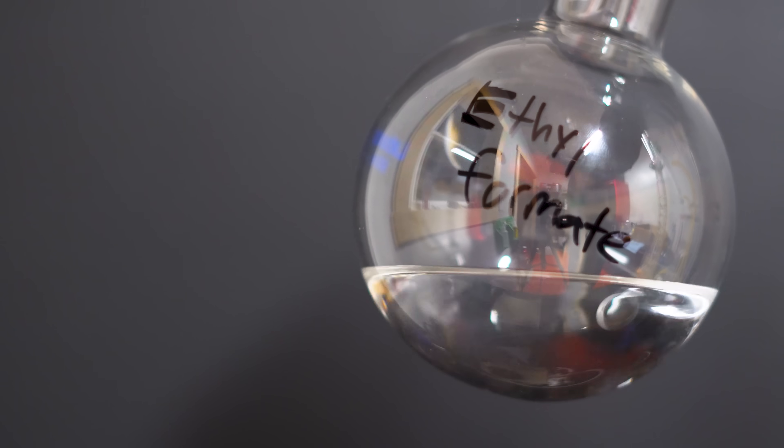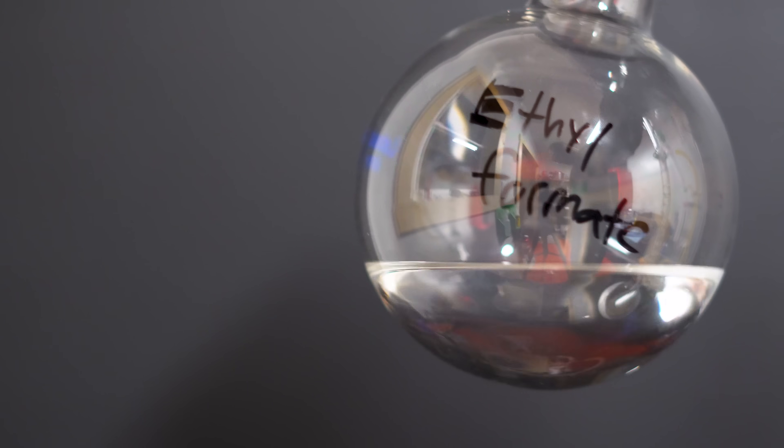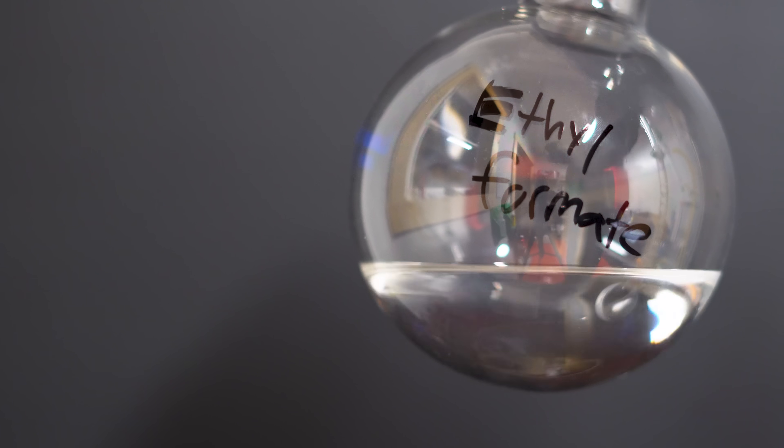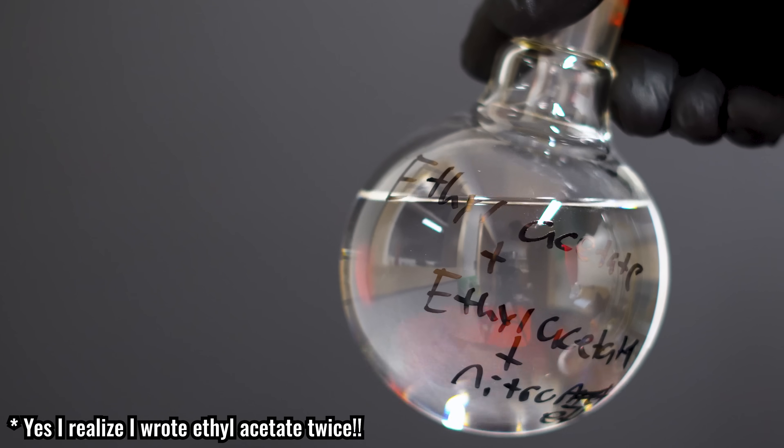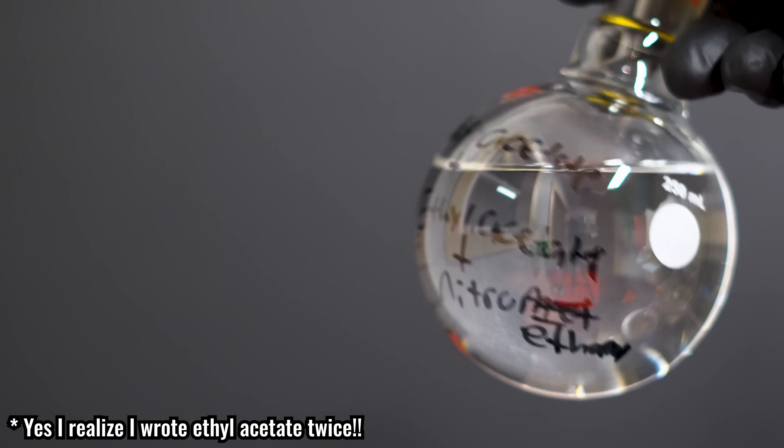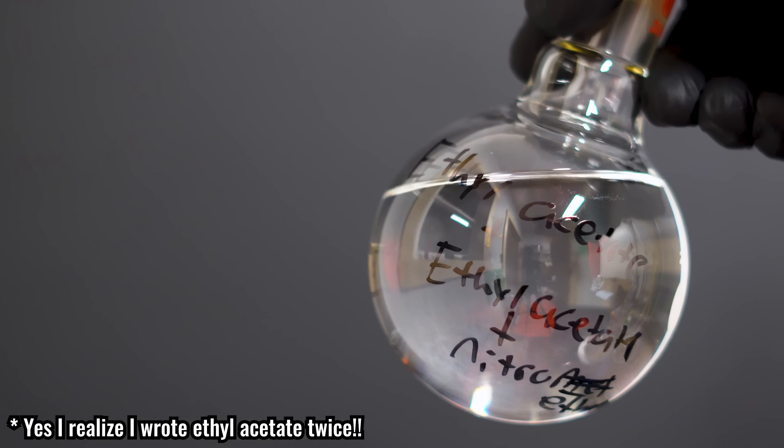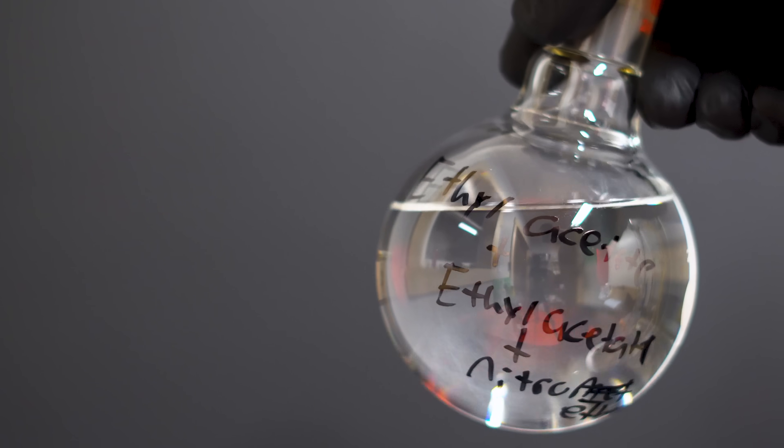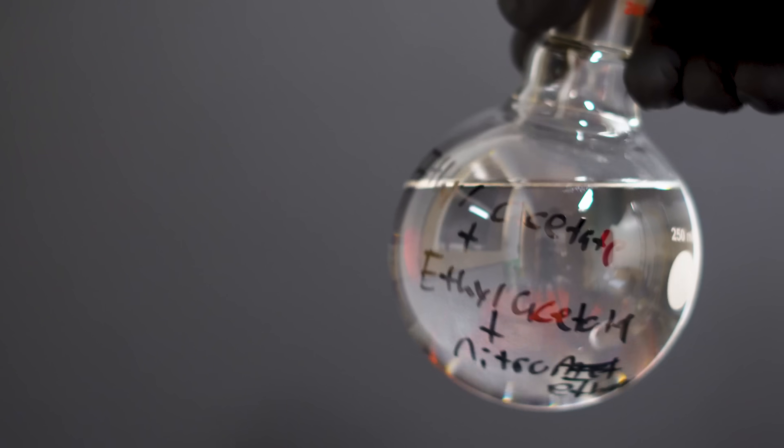Our first fraction that we collected all the way up to 70 degrees Celsius should be our ethyl formate. Ethyl formate can be pretty useful, and it has a characteristic smell of rum. The middle fraction is likely ethyl formate, ethyl acetate, and probably a little bit of nitroethane. Like I mentioned before, I'm going to pour this back in the bottle and refractionally distill.